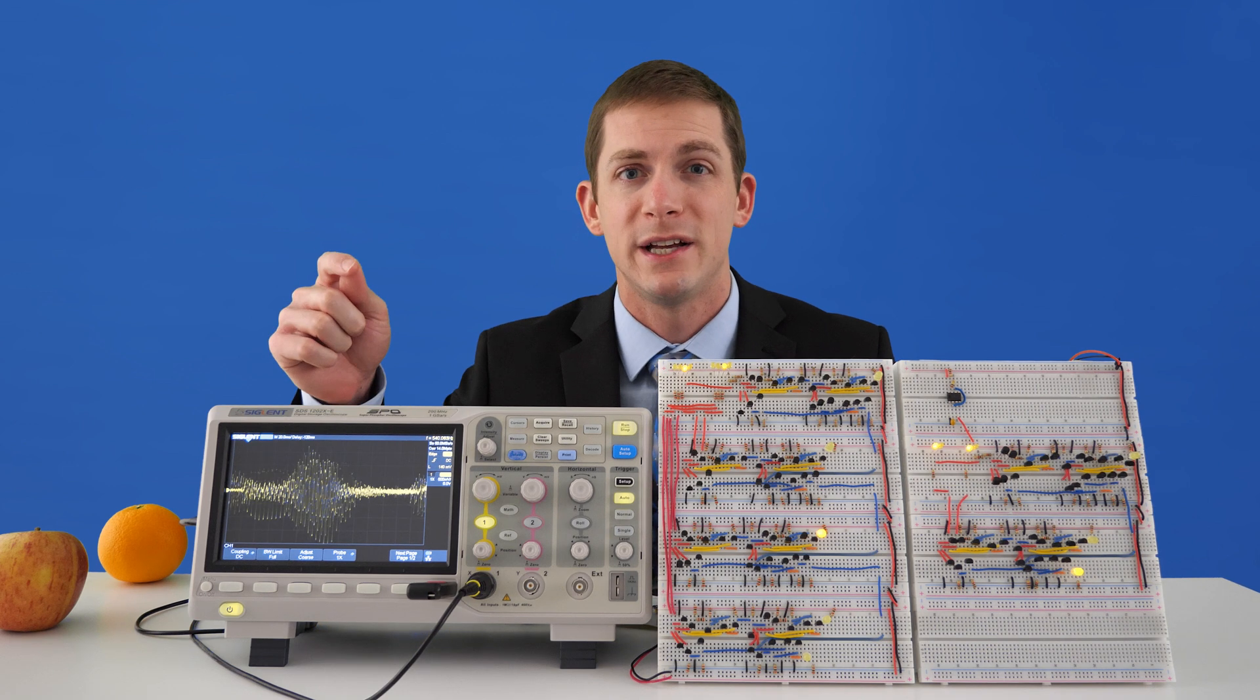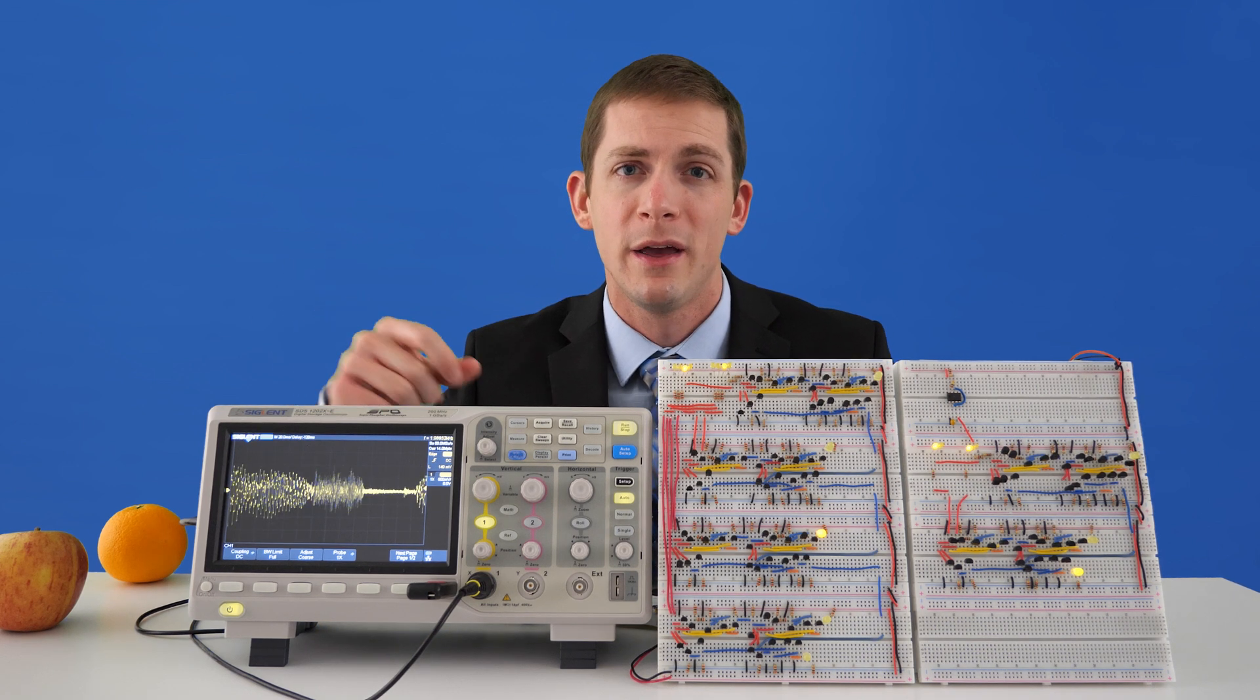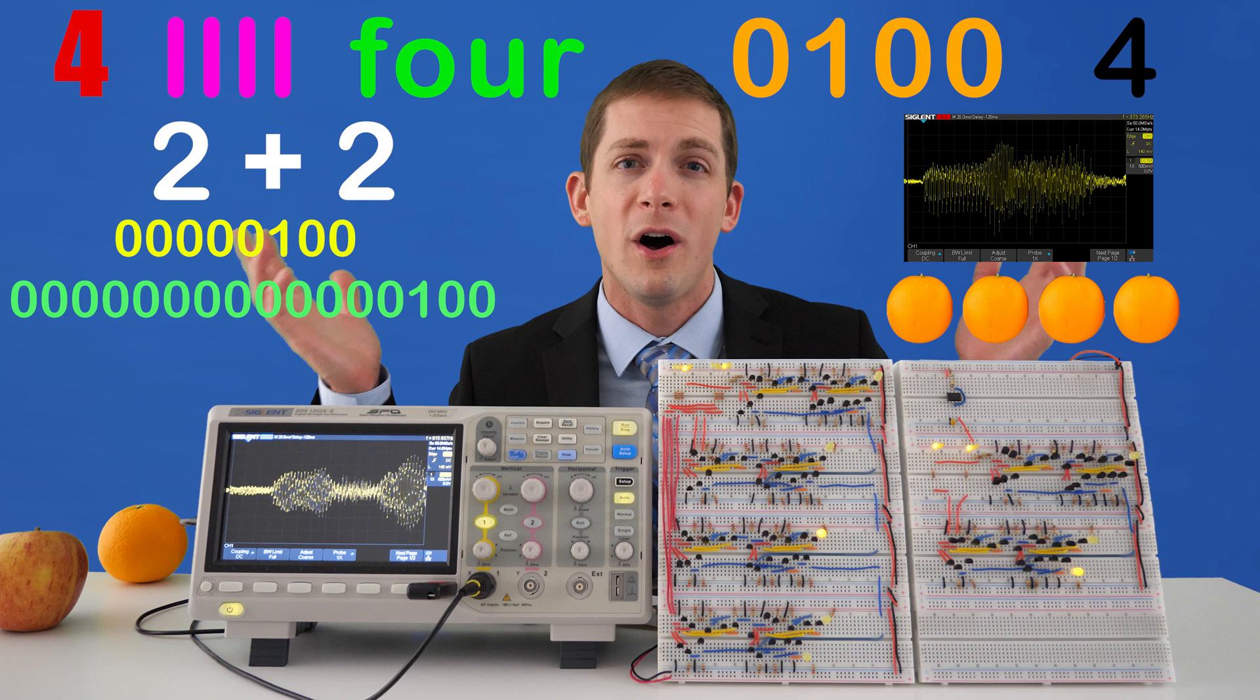The number 4 can be an analog waveform traveling through the air, the number 4 can be represented on this digital oscilloscope, and it can be represented all of these other ways.